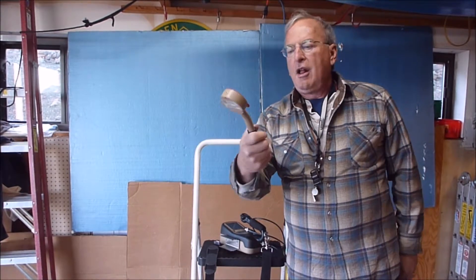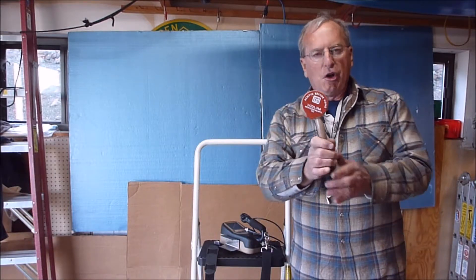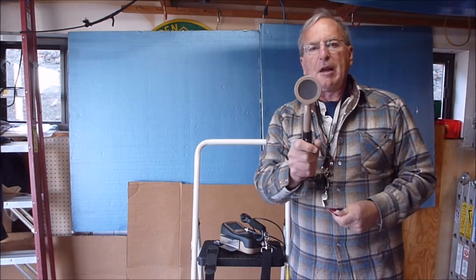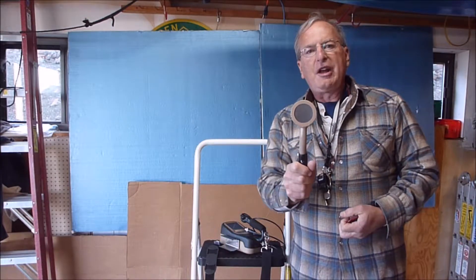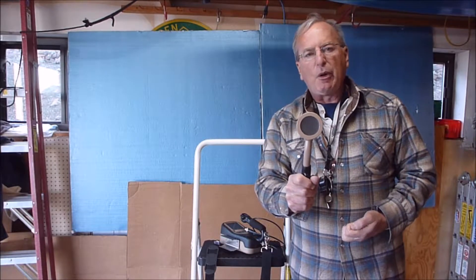Once we locate it, we use the Ludlum 44-9. This is commonly known in the business as the pancake. This is a true Geiger-Mueller Geiger counter tube. There's an actual physical tube in here. The good thing about this one is the Geiger-Mueller tube goes for alpha, beta and gamma rays.